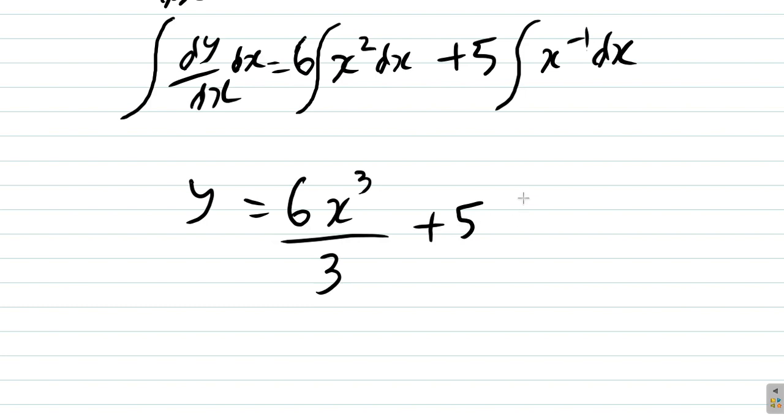Plus 5, now if you try to use the power rule here you're going to get x to the negative 1 plus 1 over negative 1 plus 1, and you'll be trying to divide by 0. So that should remind you about what the integral of 1 over x is: it is ln(x).